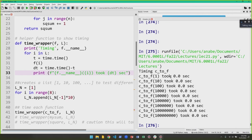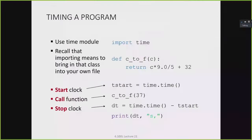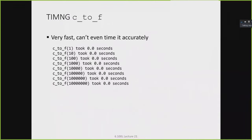Running celsius_to_fahrenheit with inputs 1, 10, 100, 1,000, 10,000 and so on — it was really fast. It took zero seconds every single time. No matter what the input, it's so fast that Python didn't even register it — essentially 10 to the negative 9 seconds or something like that, just zero seconds.